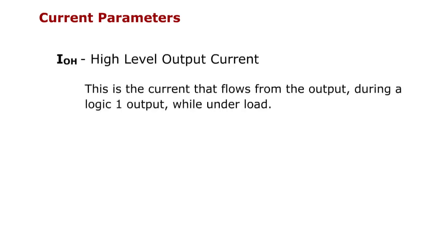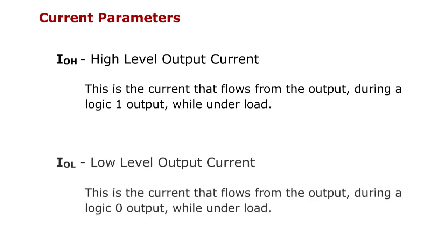High-level output current: this is the current that flows from the output during a logic 1 output while under load. Low-level output current: this is the current that flows from the output during a logic 0 output while under load.